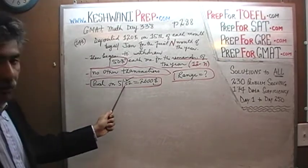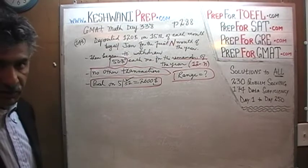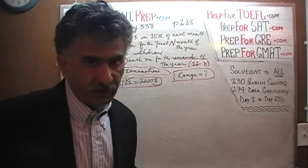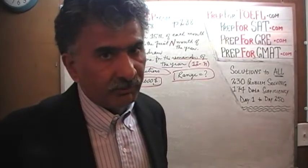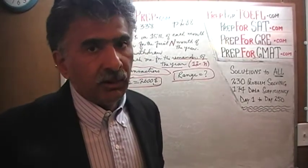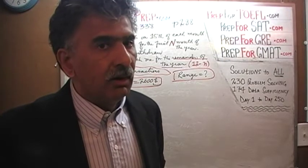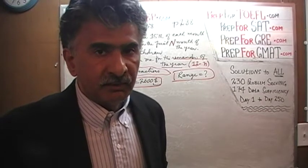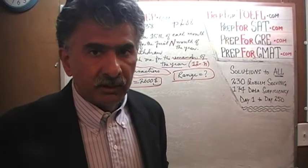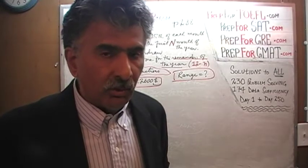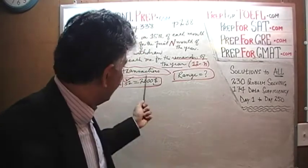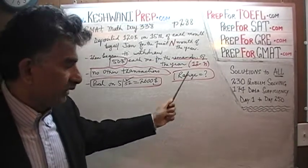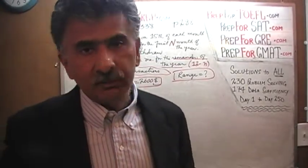We are also told that the balance on May 31st was exactly $2,600, and most importantly, we are told that there are no other transactions taking place in this account other than one transaction every month on the 15th. In the beginning of the year, for the first few months, a deposit is being made on the 15th of each month in the amount of $120, and then at some point we make a switch from deposit to a withdrawal of $50 on the 15th of every month. The question simply is: what is the range of the balance in this account?